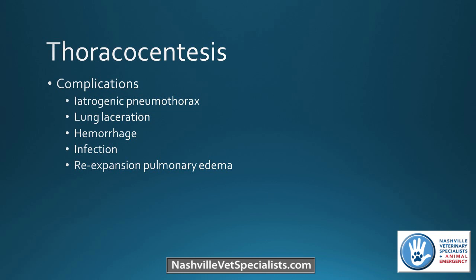Complications include iatrogenic pneumothorax — usually mild and not life-threatening — as well as lung laceration and hemorrhage. Without sterile technique there's risk of infection. Re-expansion pulmonary edema is rare but could occur with chronic pleural effusion. We also don't want to stress the patient too much, so for a very stressed cat, definitely use sedation beforehand.